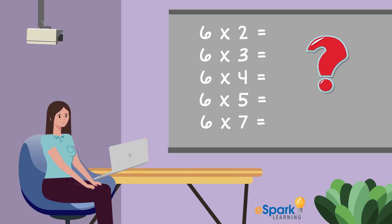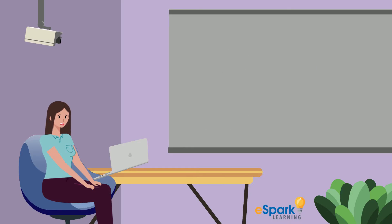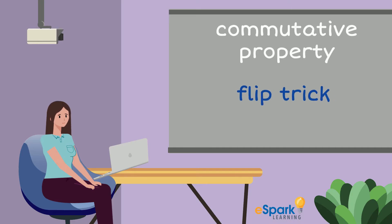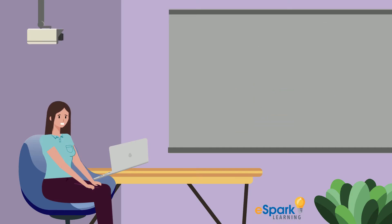One strategy that can make multiplication easier is called the commutative property. You can also think of it as the flip trick. It means that whenever you are multiplying two numbers, you can flip the order of the numbers and still get the same answer.